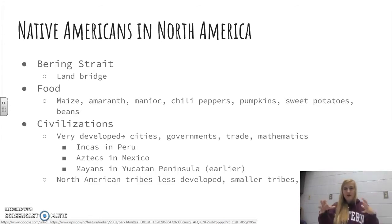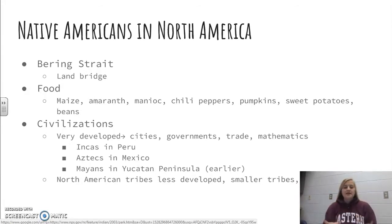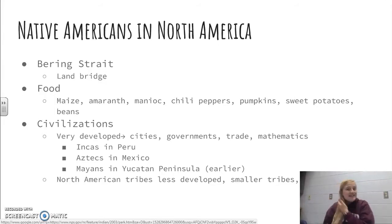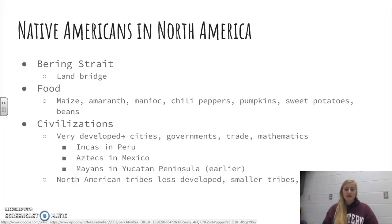You could have one tribe here and seven miles away another tribe that's completely different — different language, no contact between them. And don't think of them as uncivilized. Many of their civilizations were extremely developed: cities, governments, religion, churches, rituals, trade, mathematics, astronomy — all of those things need to be attributed to Native Americans. A lot of our European science was very much behind Native American science during this time period.